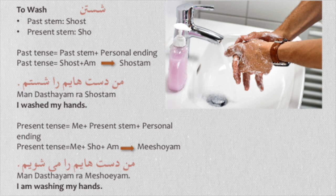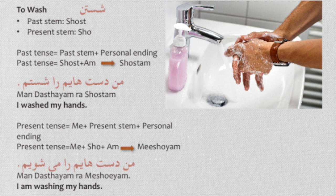The ninth verb is shostan — to wash. The past stem is 'shost' and the present stem is 'shu'. For the past tense, conjugated for I, we need the past stem 'shost' plus 'am': 'shostam'. Man dast haiam ra shostam — I washed my hands. For the present tense, we need 'me' plus present stem 'shu' plus 'am': mi shuyam. Man dast haiam ra mi shuyam — I am washing my hands.